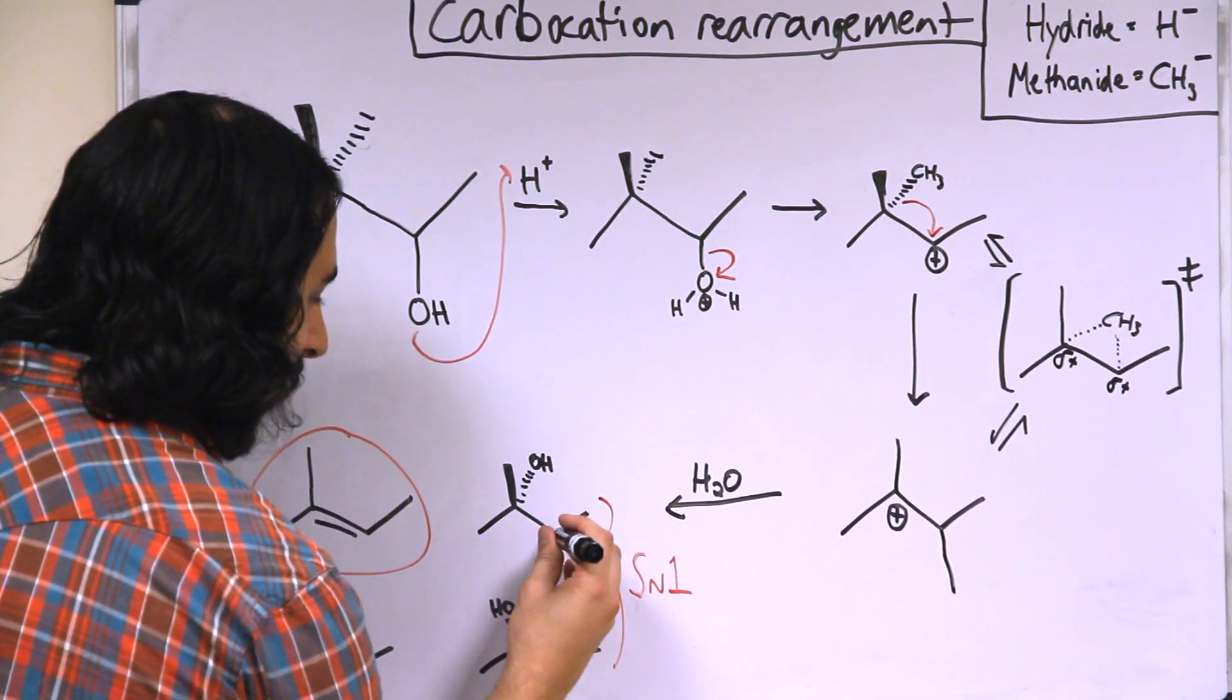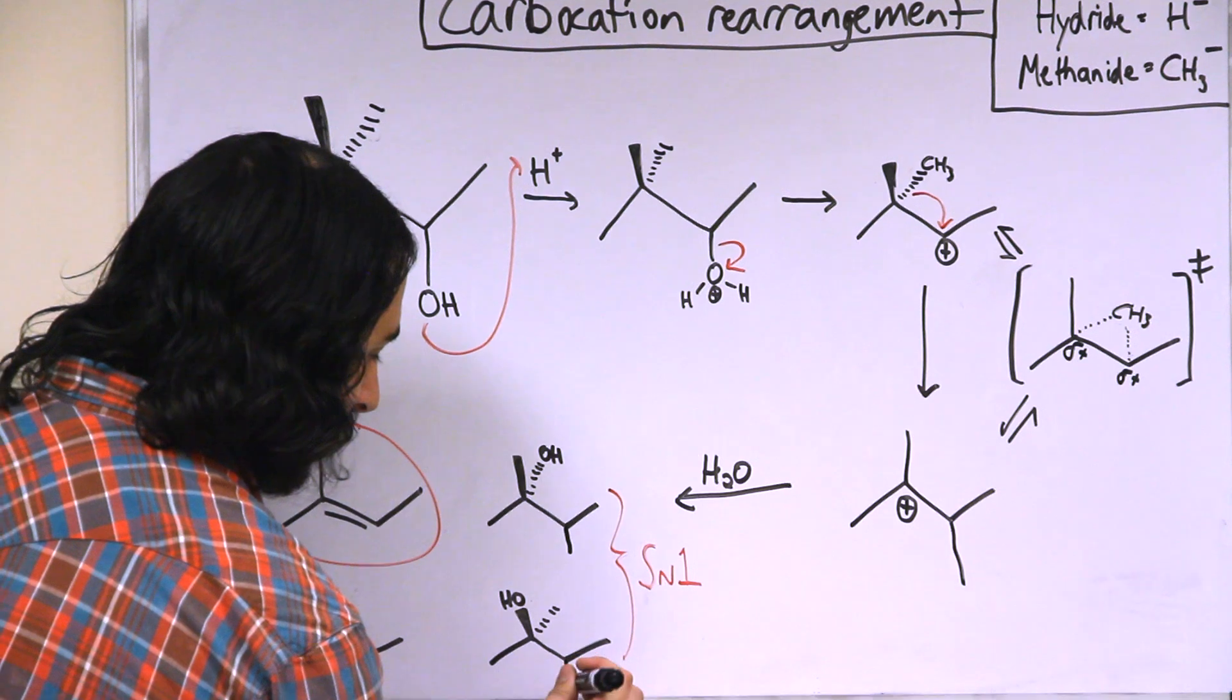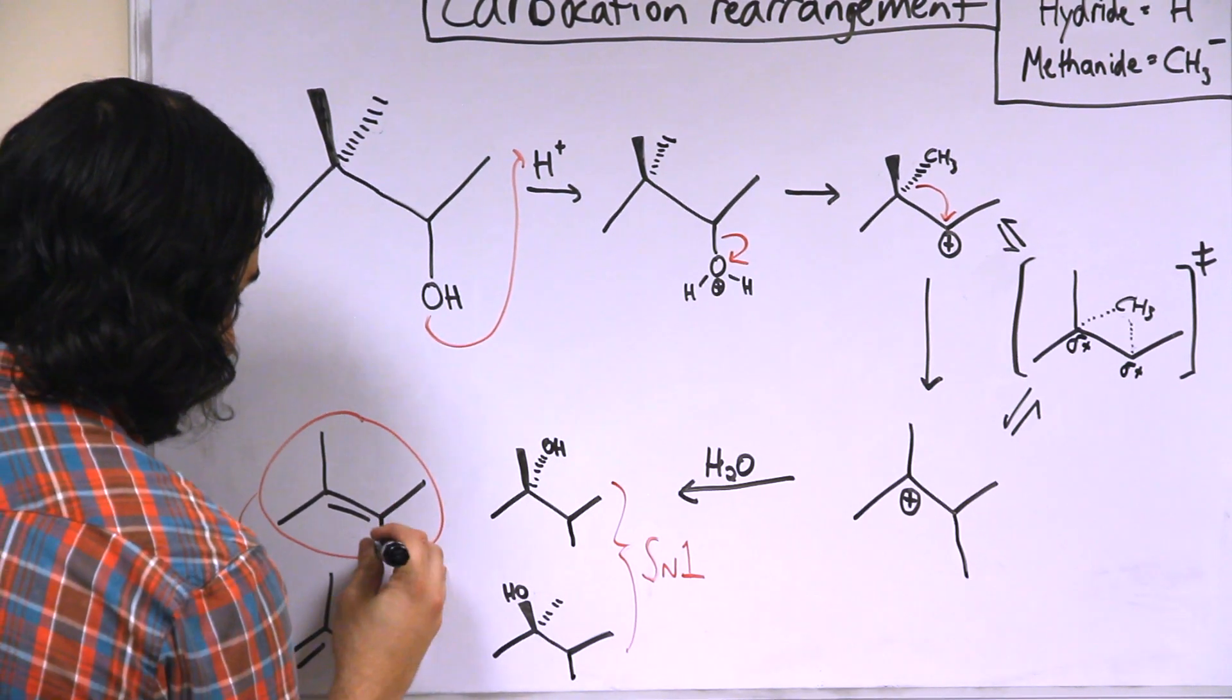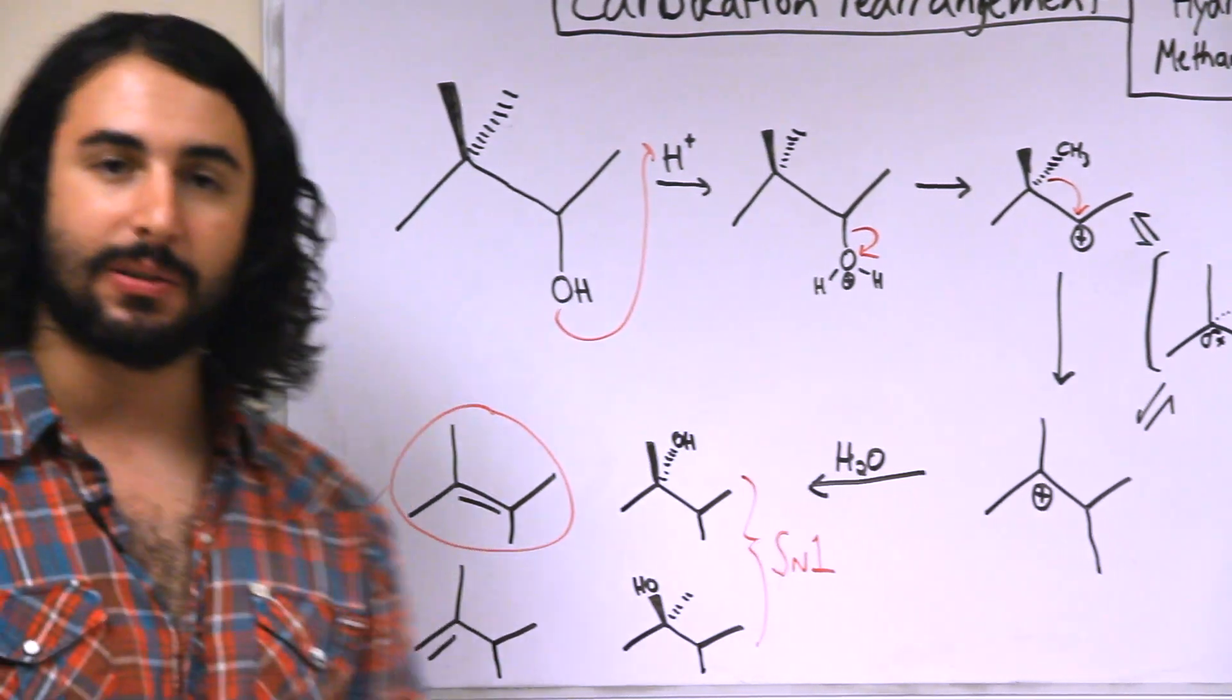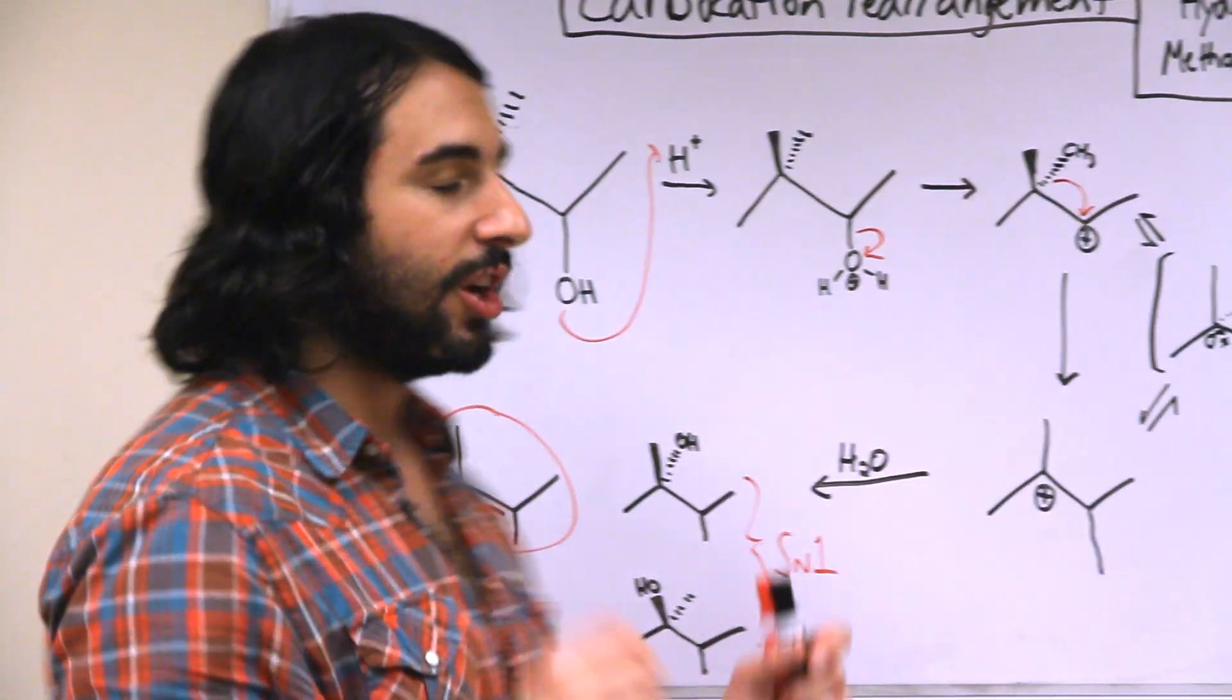And then once again, we can just add methyl groups all around to represent that methyl group that shifted, and once again, probably Zaitsev will dominate here.